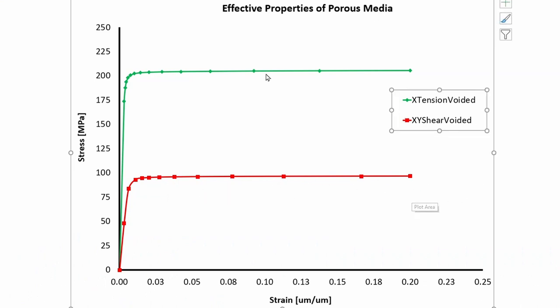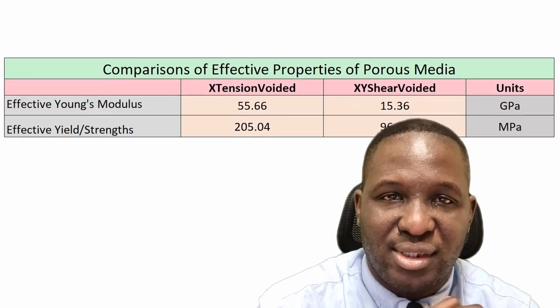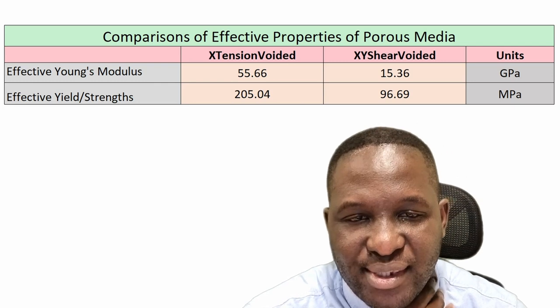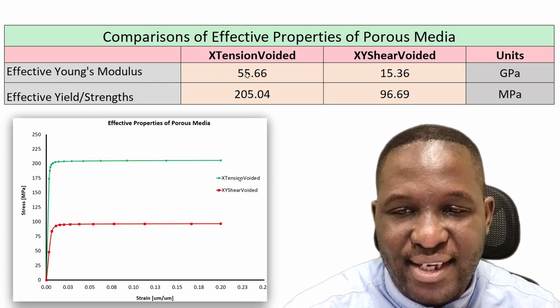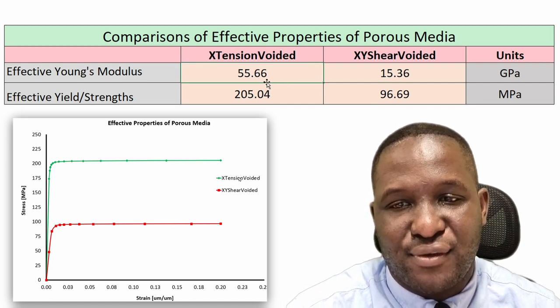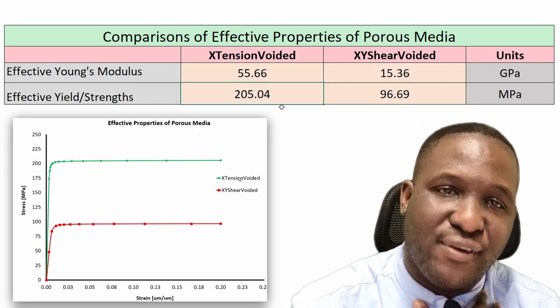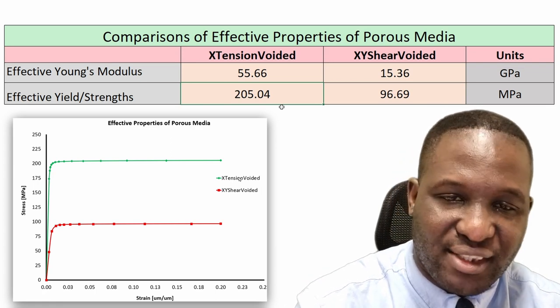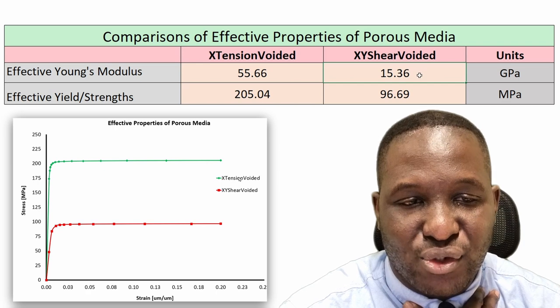Comparing the stress-strain data, we see effective properties in both tension and shear. For the tensile voided case, the modulus has reduced from the original 75 GPa to 55 GPa due to the voids, and the effective strength reduced from 250 MPa to 205 MPa. The same reduction translates to shear modulus and shear strength. For generating porous media manually without a script, or for more on RVE and advanced material modeling, links are provided in the description.